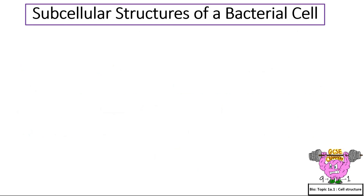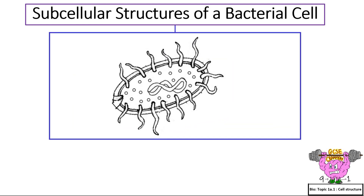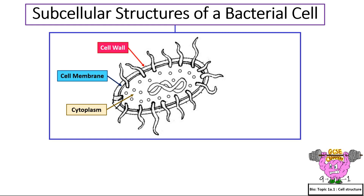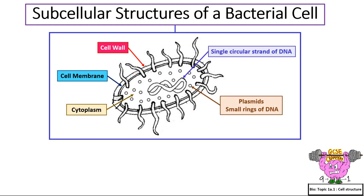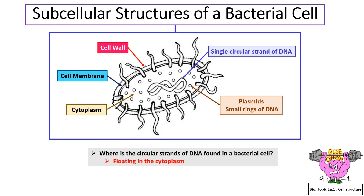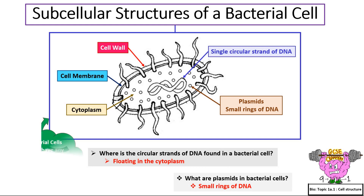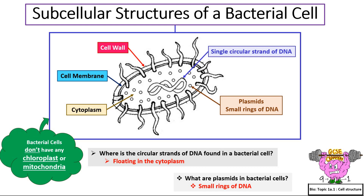The subcellular structures of a bacterial cell. Name five different subcellular structures of a bacterial cell: cytoplasm, cell membrane, cell wall, circular strand of DNA, and plasmids — small rings of DNA. Where is the circular strand of DNA found in a bacterial cell? Floating in the cytoplasm. What are plasmids in bacterial cells? Small rings of DNA. Remember, bacteria cells don't have chloroplast or mitochondria.